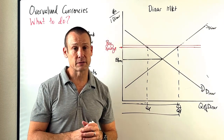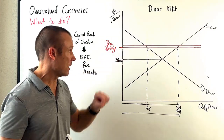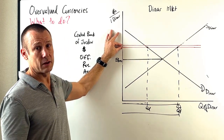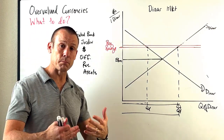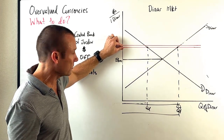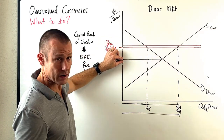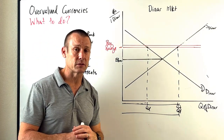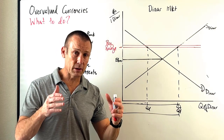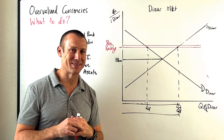The final thing you could do is devalue your currency — just move that exchange rate range down. I say 'just do it' but I want you to understand this is a promise by the Jordan Central Bank. If they devalue and move the range down without addressing supply and demand, they're going back on a promise to exchange dinar for dollars at that range. People might not believe their promises as much going forward. That's overvalued currencies — it's a complicated topic and you might want to watch this twice.